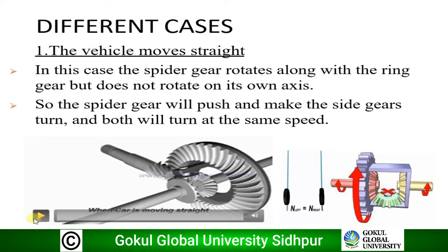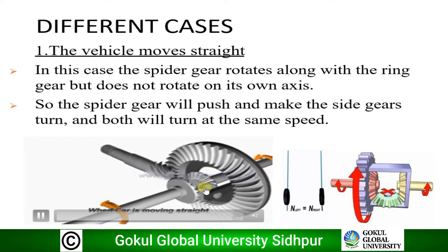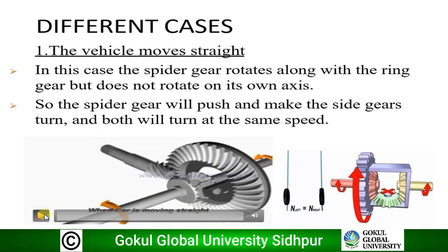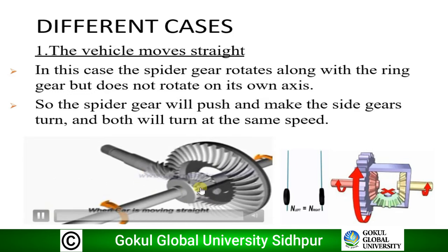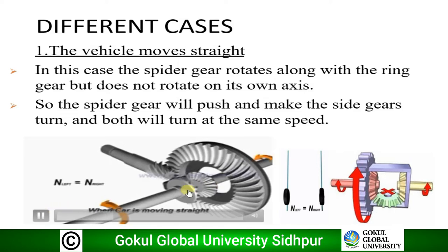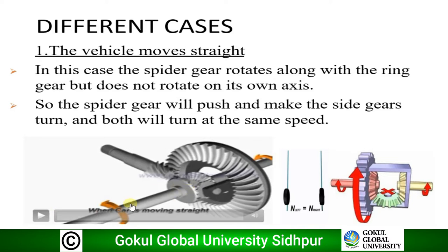In the animation: the pinion gear is rotating, the ring gear is rotating, and the spider gear is only rotating — it is not spinning on its own axis. It rotates both side gears, and the RPM is divided in equal numbers: N-left equals N-right. This is how straight motion works.